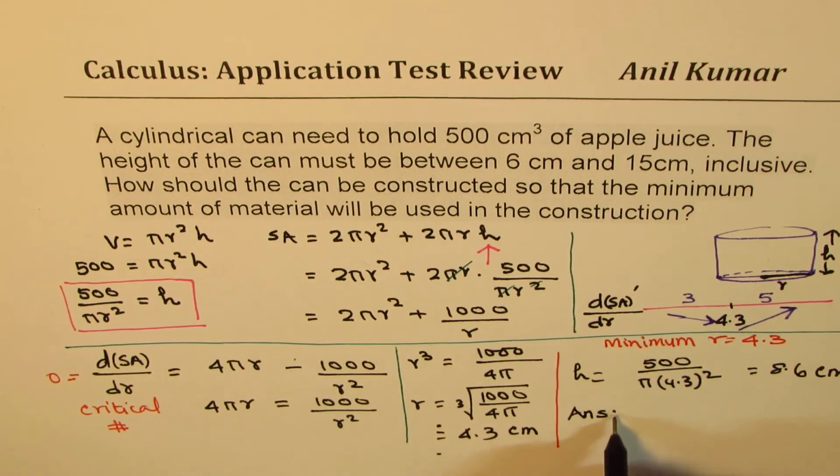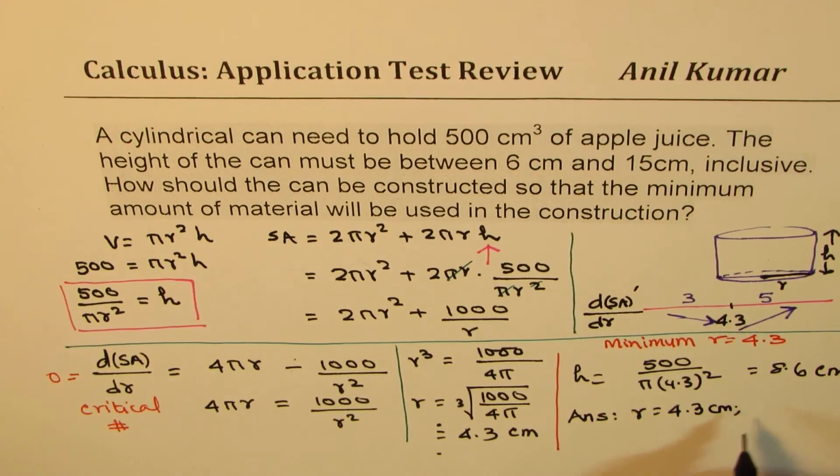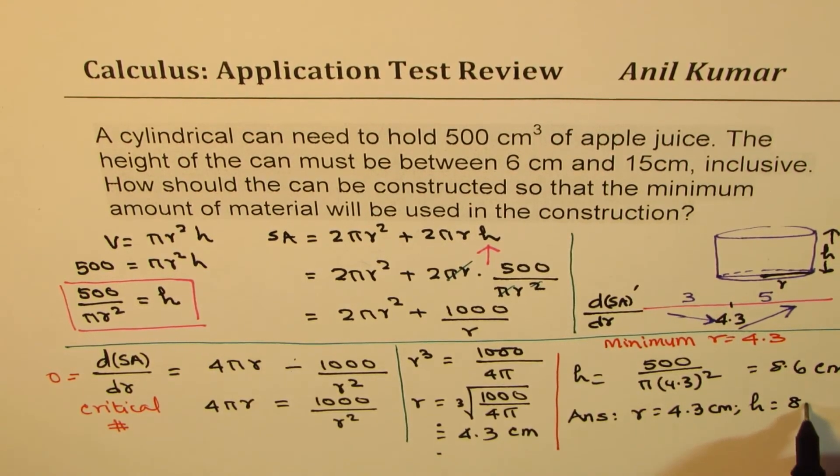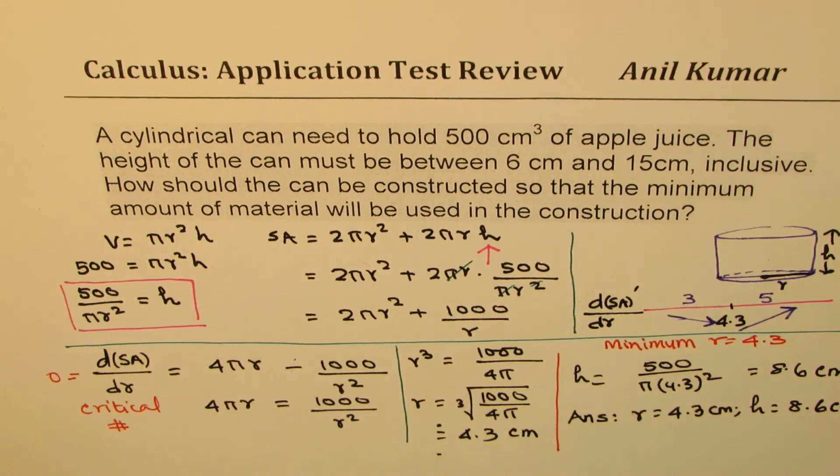Now that is between 6 and 15 centimeters. So it perfectly works for us. And therefore, our answer is that the radius should be 4.3 centimeters and height should be double, 8.6 centimeters.